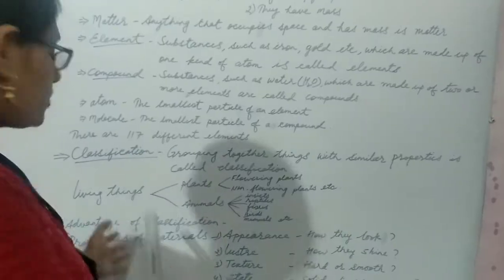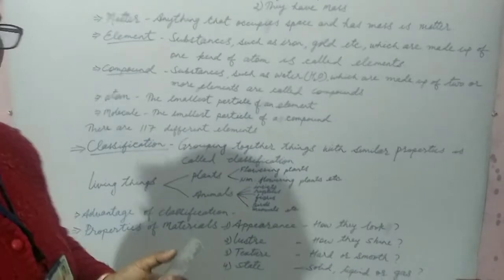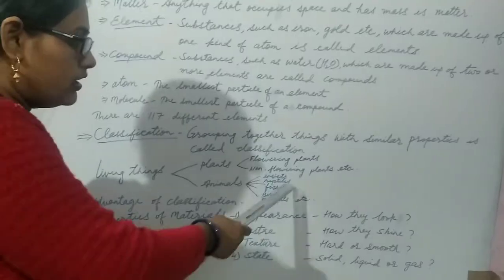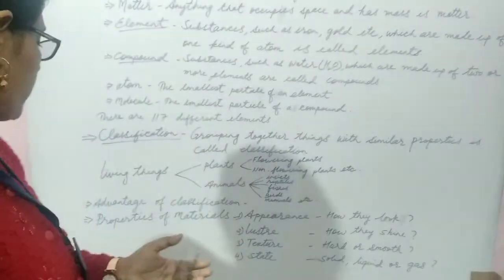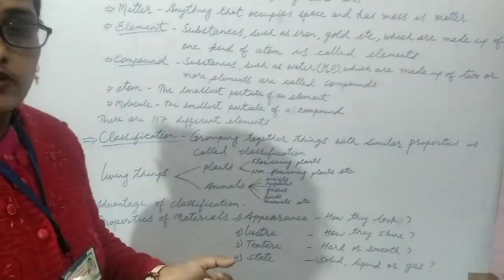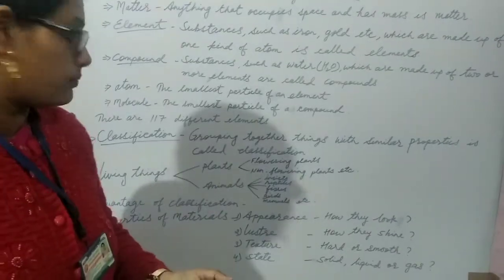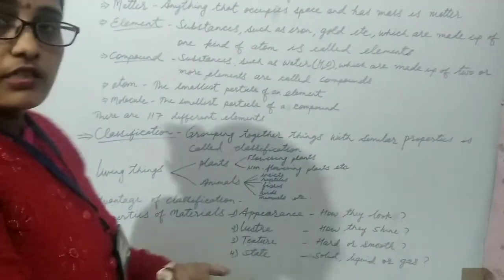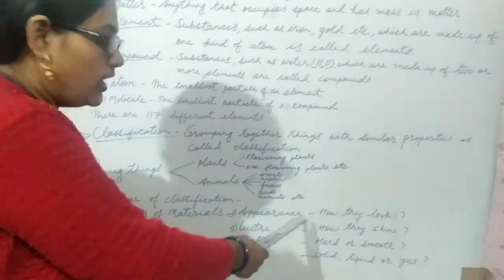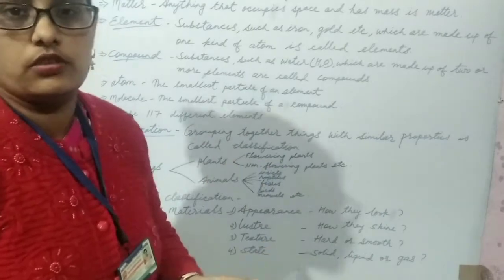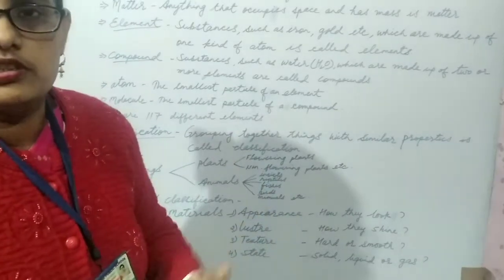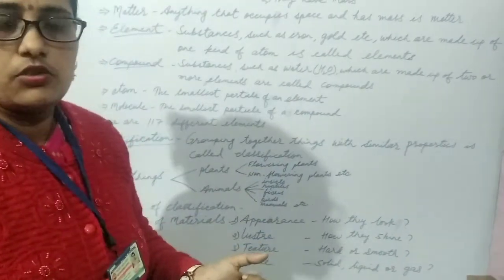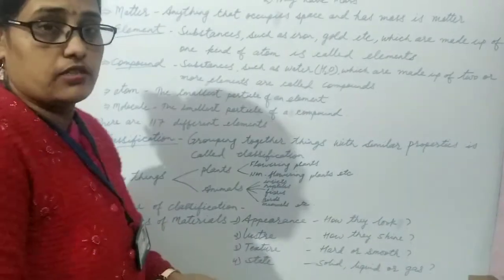Now properties of materials. Materials can be classified on the basis of their appearance, lustre, texture, state, etc. Let's discuss the first appearance. Appearance means how do they look. We see paper, wood, air and steel etc. around us. They all look different from each other. This is called appearance. So materials can be classified on the basis of appearance. How do they look.